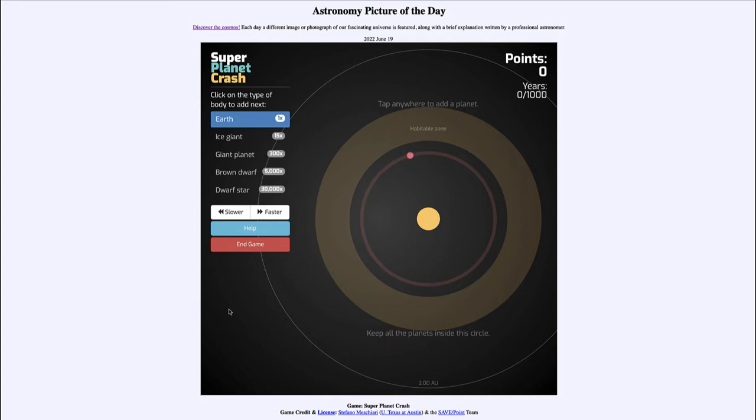And there are a number of objects you see listed on the left hand side, including Earth sized planets, ice giant planets like Uranus or Neptune, a giant planet like Jupiter, a brown dwarf or failed star, and a dwarf star. And you can add up to 10 planets here.